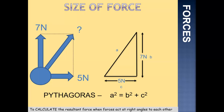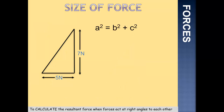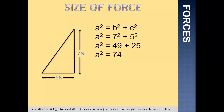So A squared equals B squared plus C squared. In this case, B is 7 and C is 5. So A squared, the hypotenuse, is equal to 7 squared plus 5 squared — that would be 49 plus 25. 7 squared is 49 and 5 squared is 25. Add those together and A squared is equal to 74. We now need A on its own, so if A squared is 74, the square root of 74 gives us A. The square root of 74 can be calculated as 8.6 newtons. So our resultant force in this case is 8.6 newtons.